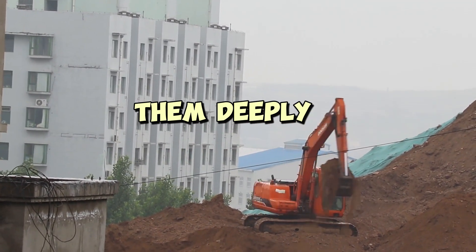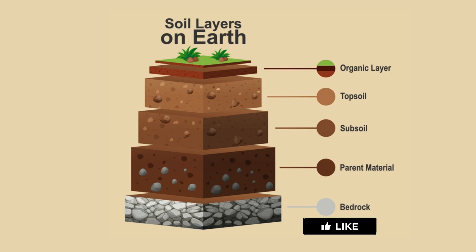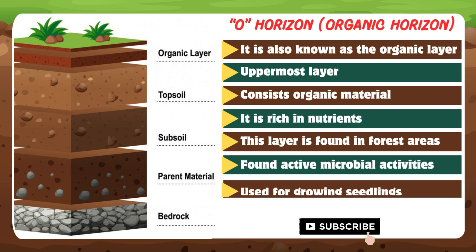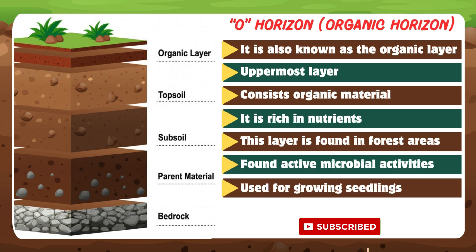O horizon — it is also known as the organic layer. This is the uppermost layer, consisting mainly of organic materials such as decomposed leaves, plant residues, and other organic matter. It is rich in nutrients and is the layer where most plant roots are concentrated. This layer is found in forest areas, where active microbial activity makes this soil useful for growing seedlings.